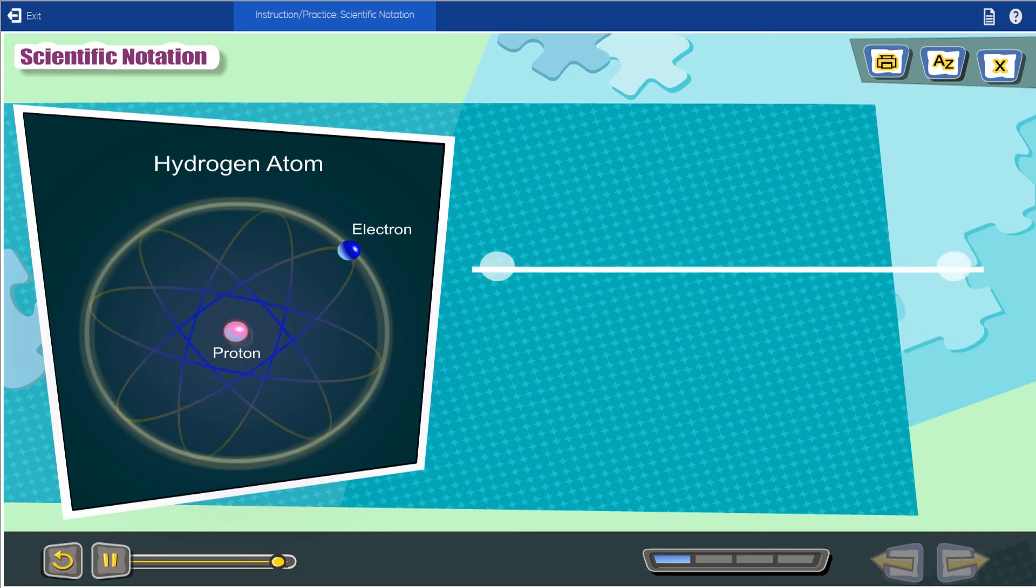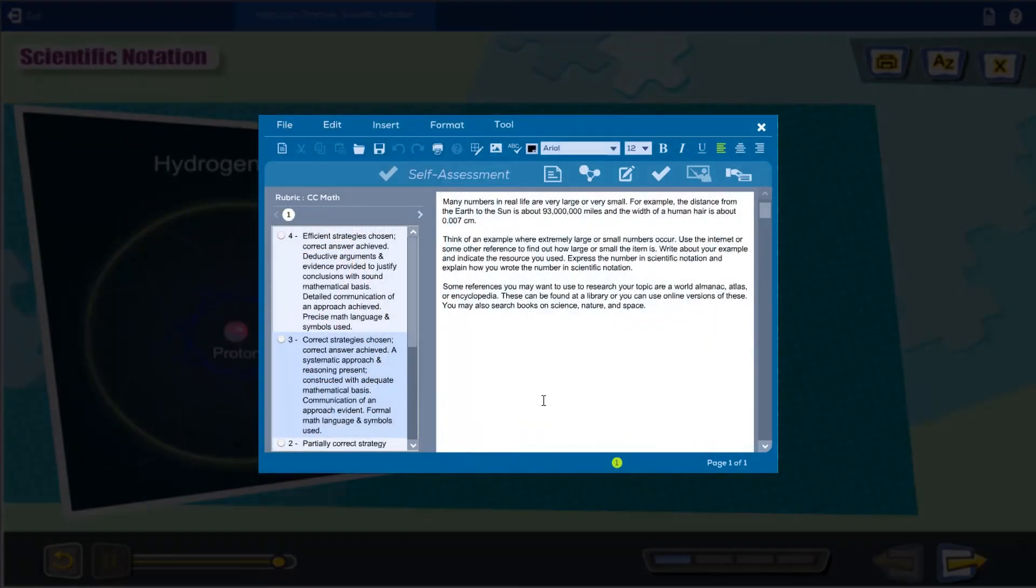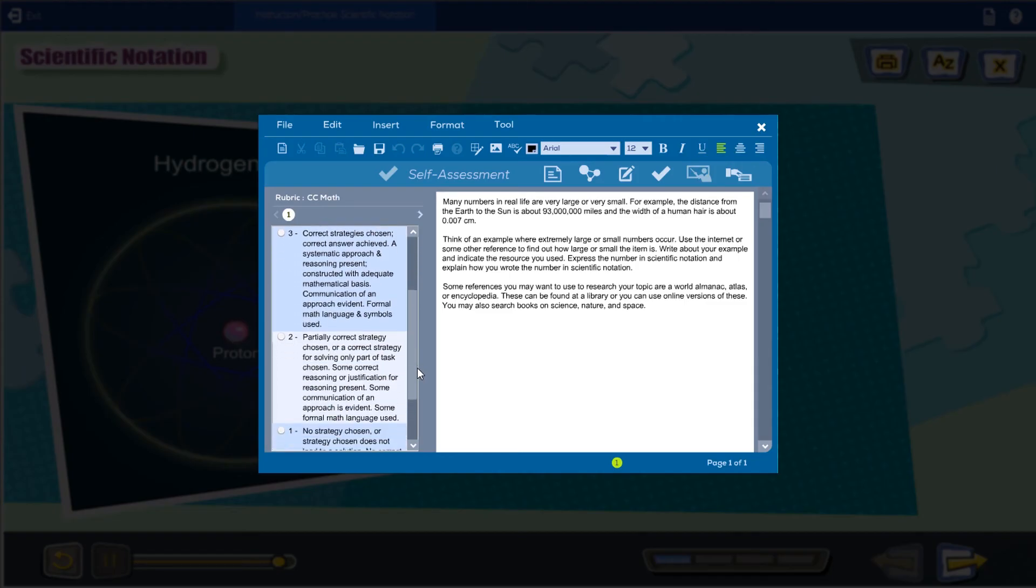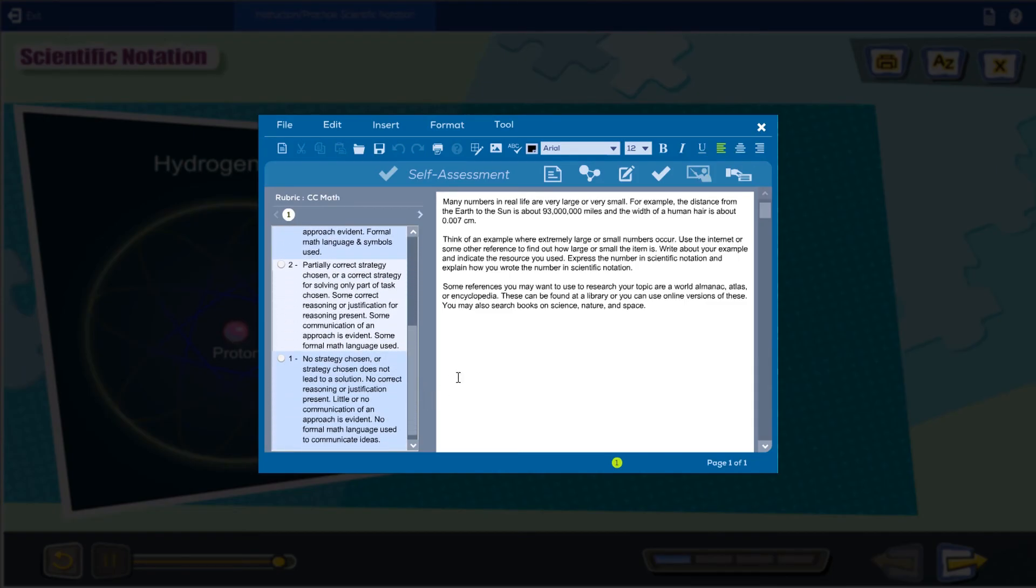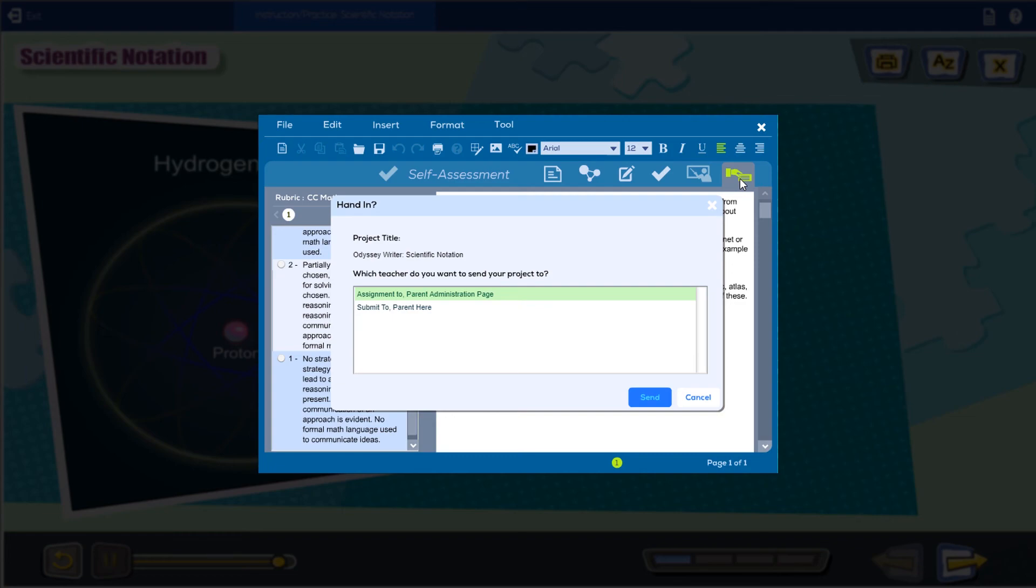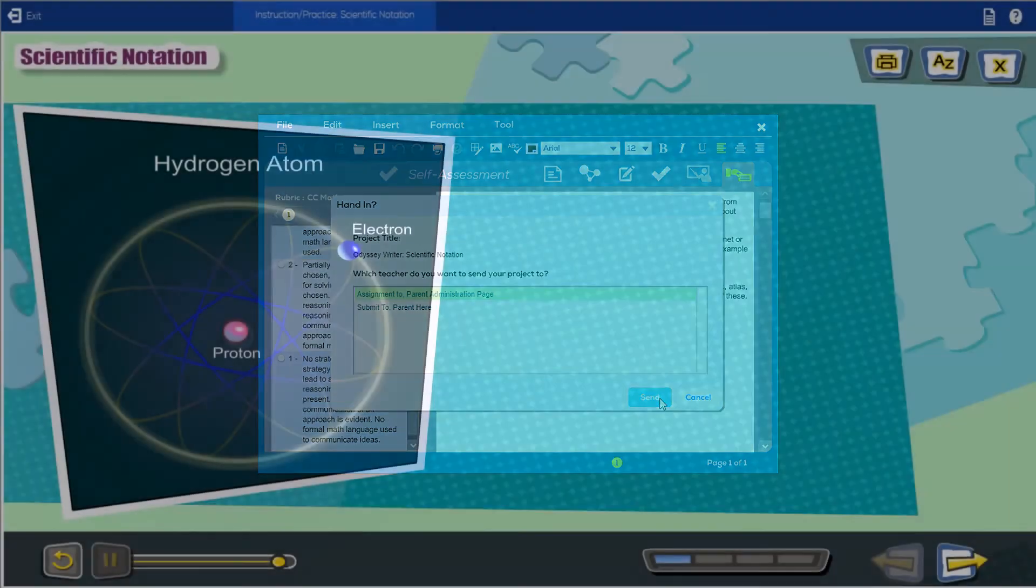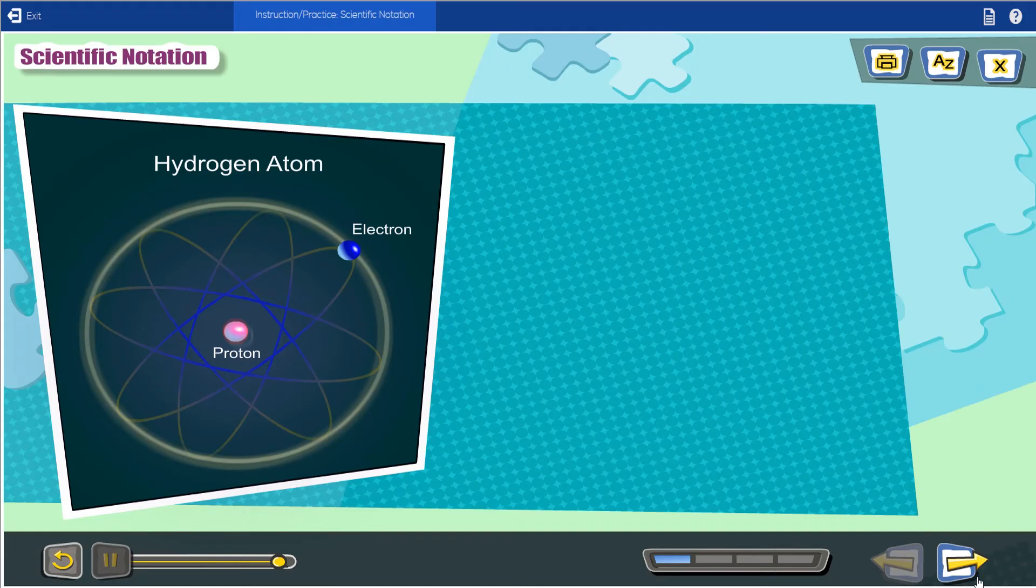This particular activity is one that I wanted to highlight because in addition to the practice problems in the instructional lesson, it has an Odyssey writer activity, which incorporates more than just math. The Odyssey writer activity encourages both internet and book research and writing in addition to the math skill.